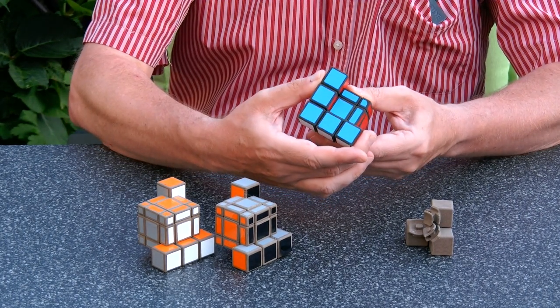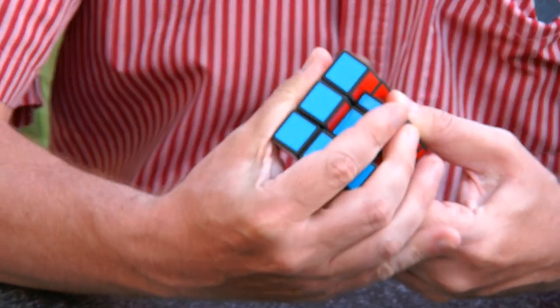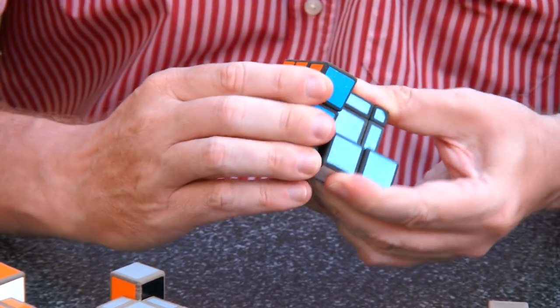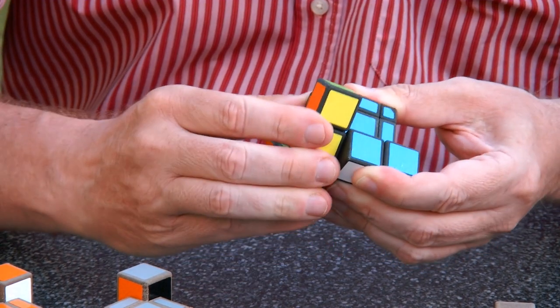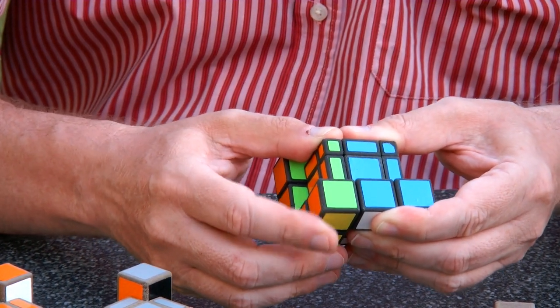When you try to turn it and scramble it, what you will see is that in some directions it turns, but then when you want to turn it further it blocks.